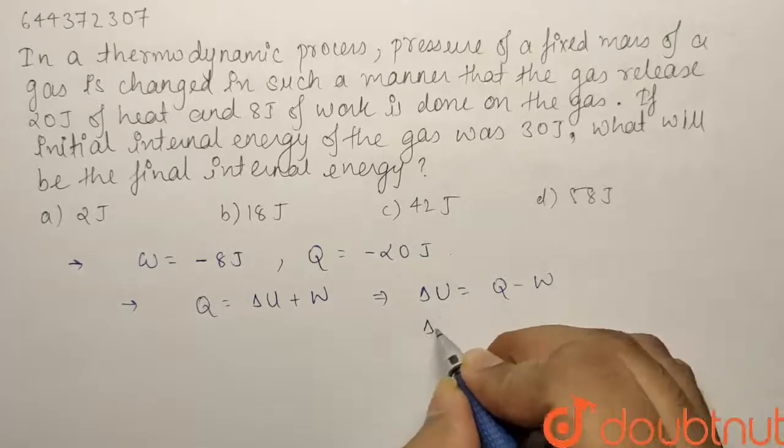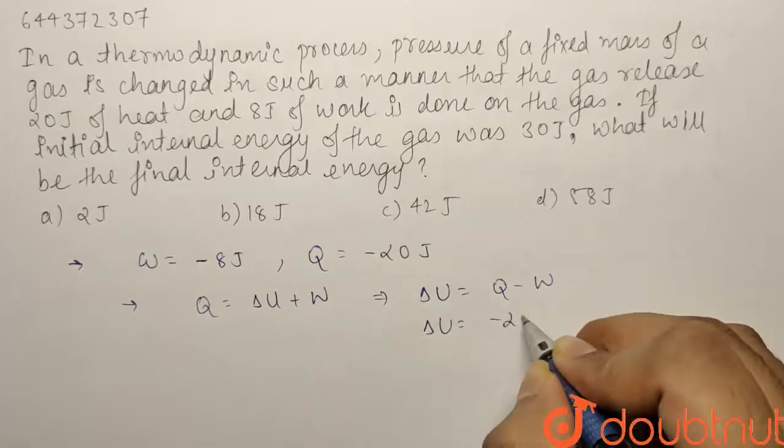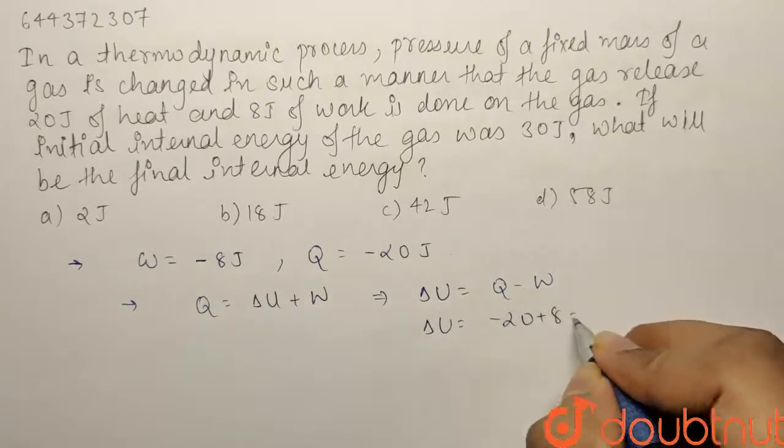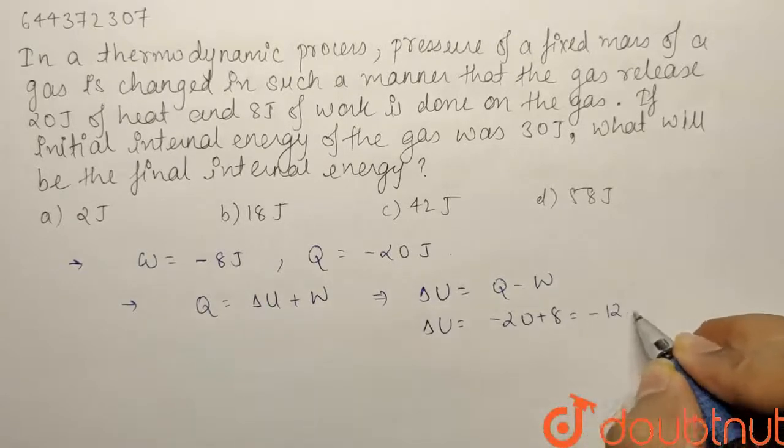Delta U will come out to be Q minus W. We have Q equals minus 20 and W equals minus 8. So minus of minus 8 turns out to be plus 8. So it comes out to be minus 12 joules.